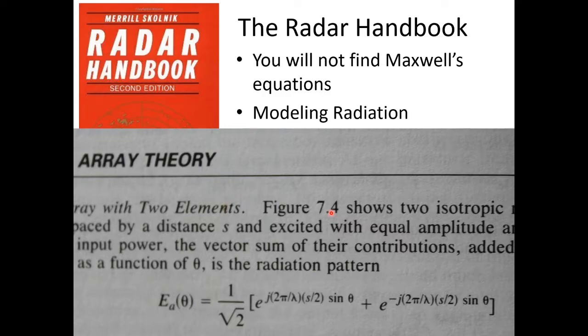If you don't believe me, go into the Radar Handbook. In the Radar Handbook, you will not find Maxwell's equation or a reference to Maxwell's equation. Instead, when they come down to array theory, which is Chapter 7, you'll find e to the j omega right there. Not Maxwell's equations, e to the j omega.